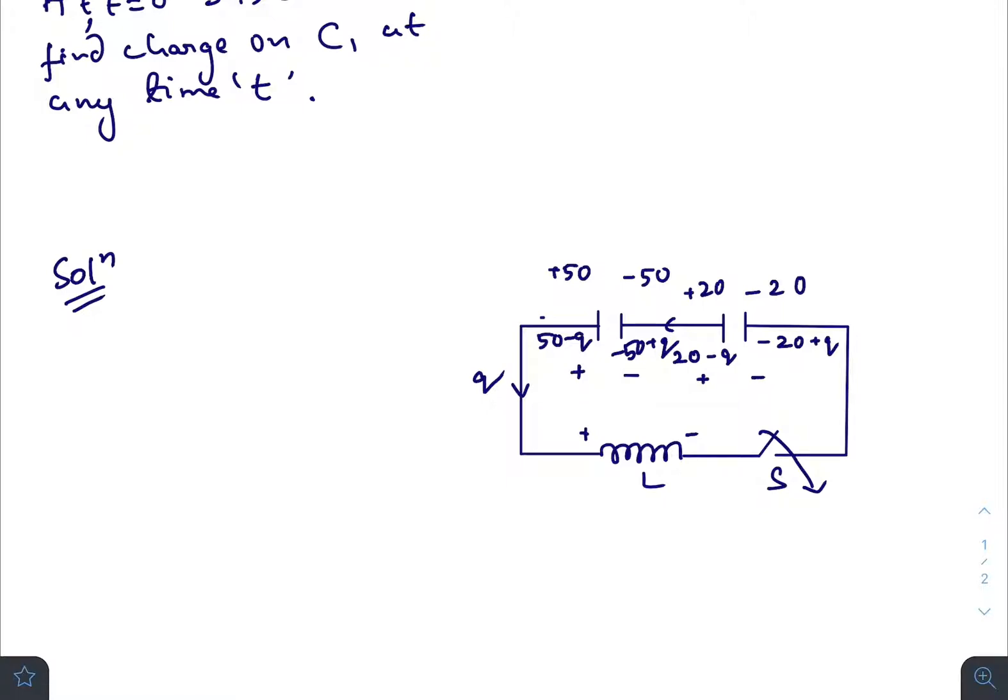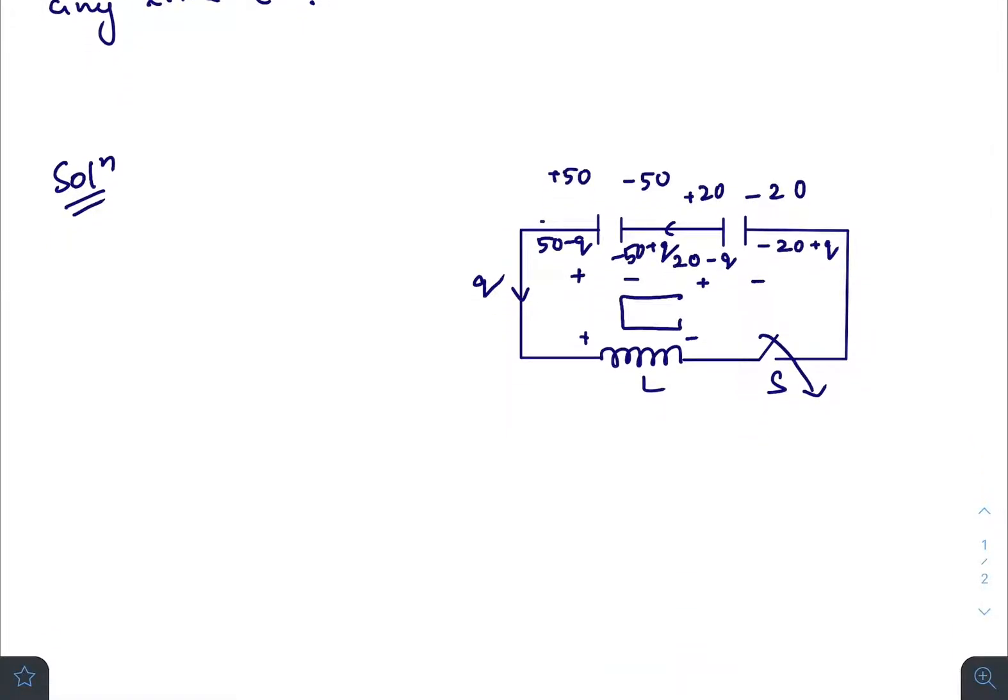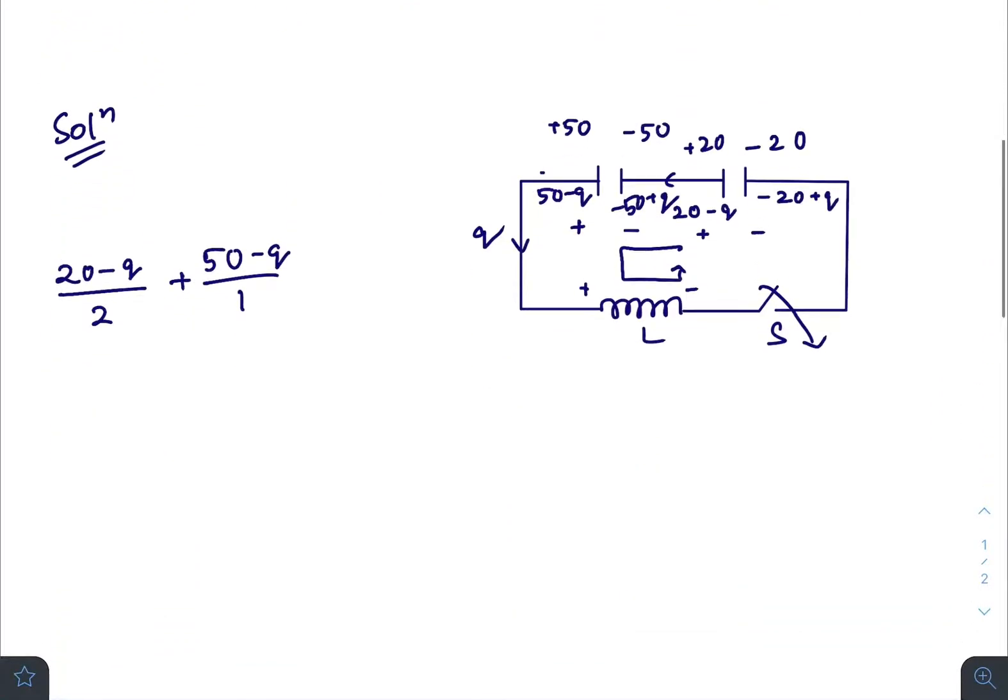Now if we consider a closed loop, we can write the voltage loop law. We have (20 minus q) divided by C for this capacitor, as I am going from lower potential to higher potential. V equals charge on the inner surface of the positive plate divided by capacitance. Again, from minus to plus, 50 minus q divided by 1, since it was 1 farad.